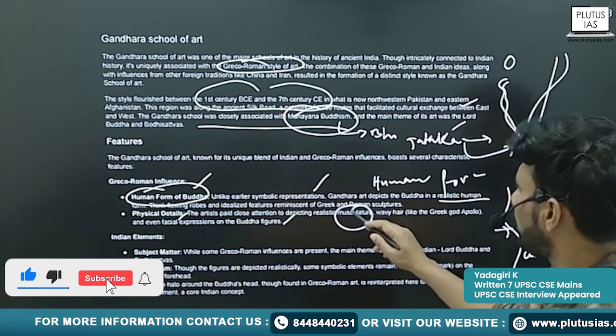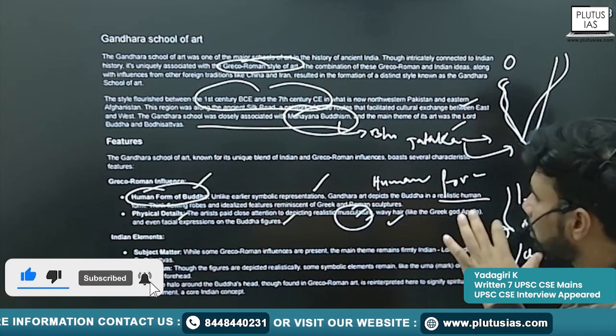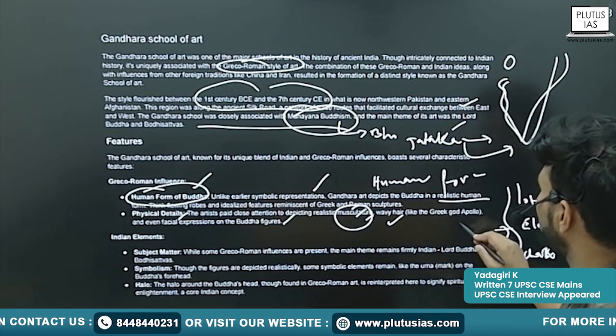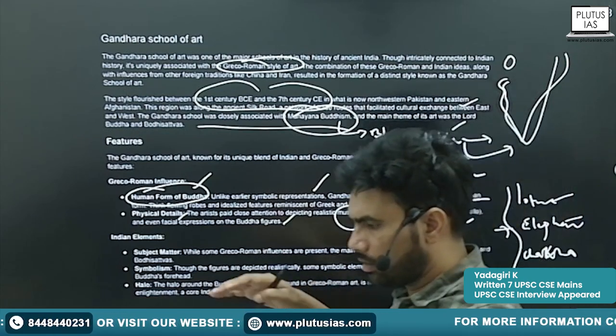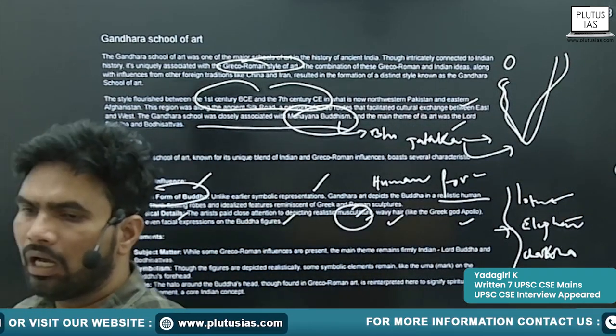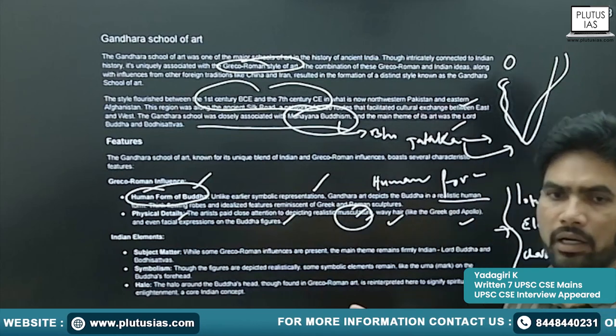You will see a muscular body, wavy or curly hair — like the features of the Greek god Apollo, the sun god.